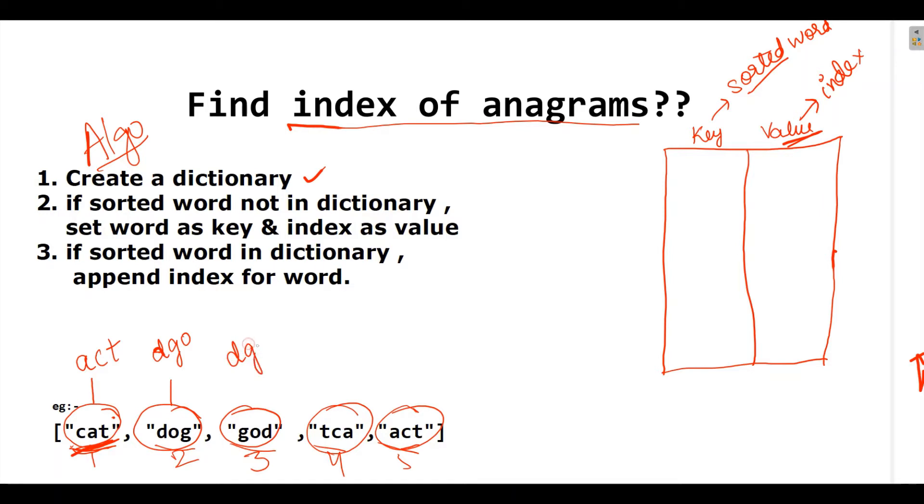And for TCA, A, C, T. And similarly, this have the same act. Now, I will iterate first. First is cat. So, I will be having sorted word as act. So, first of all, I need to see whether this sorted word is in dictionary.